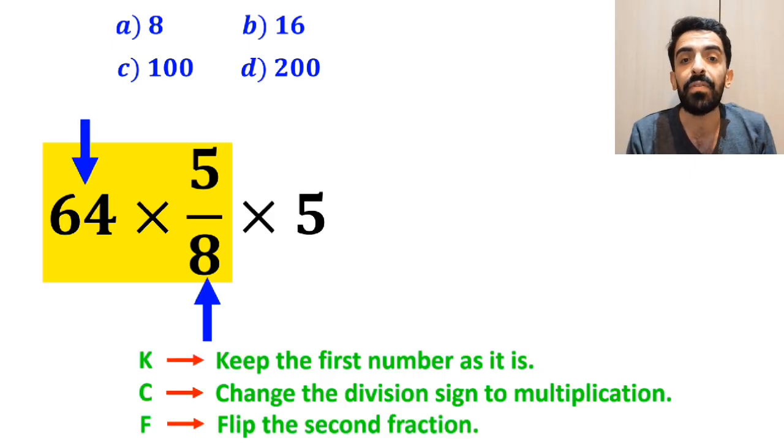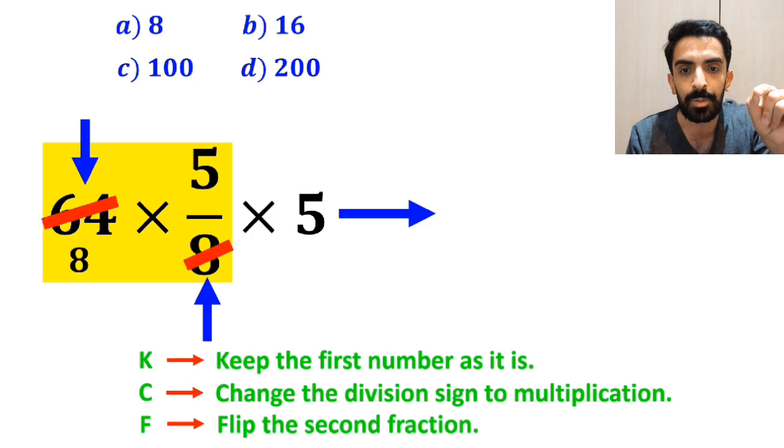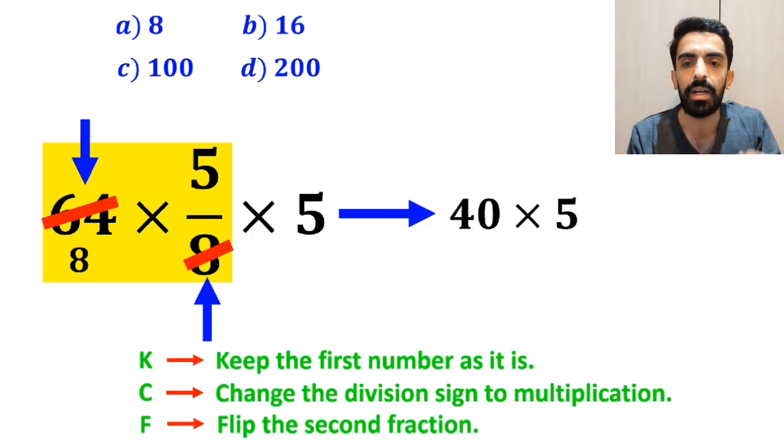Now, we can easily simplify the number 64 with the 8 in the denominator, and instead of this expression, we can write 40 multiplied by 5, which finally gives us the answer 200.